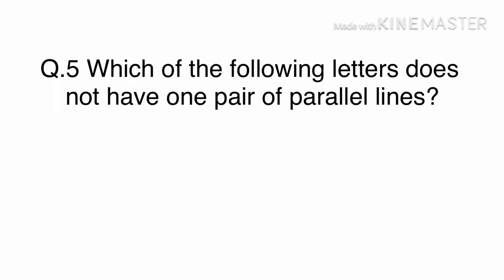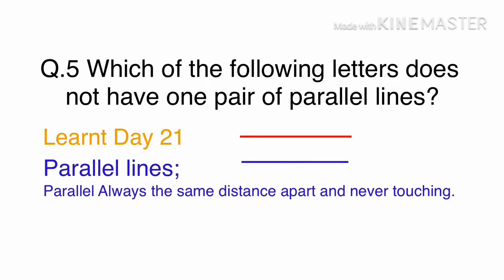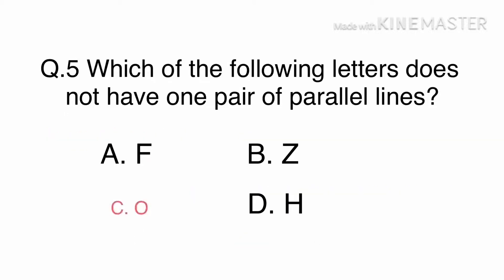Question 5: Which of the following letters does not have one pair of parallel lines? A. F, B. Z, C. O, or D. H. We have already learnt parallel lines in day 21. The only letter with no parallel lines is the letter O. The answer is C, O.